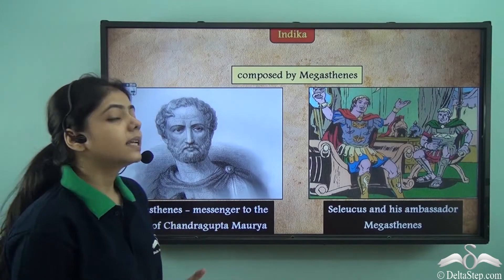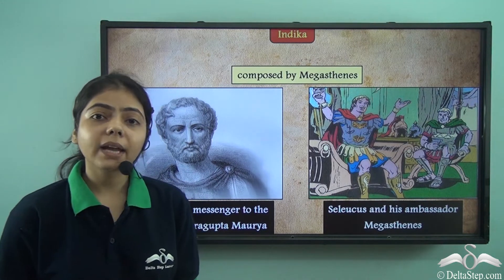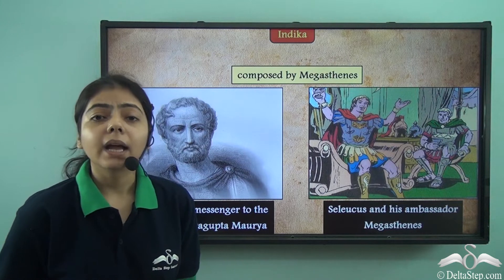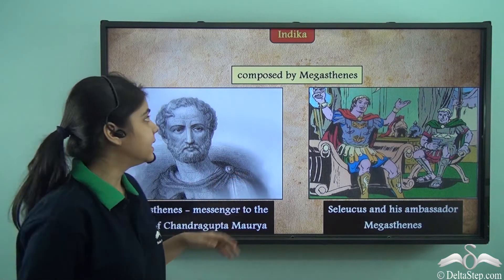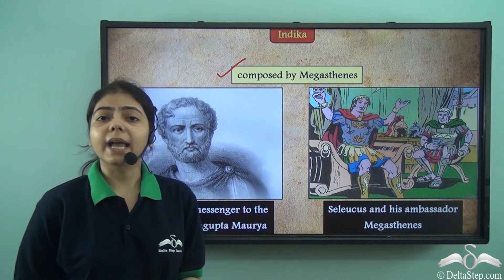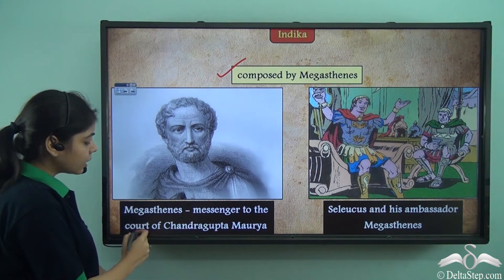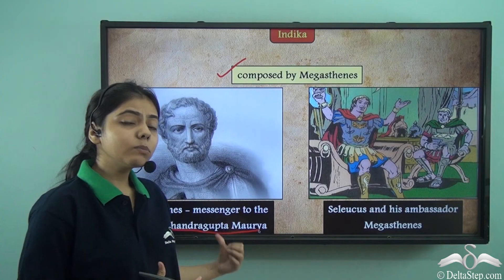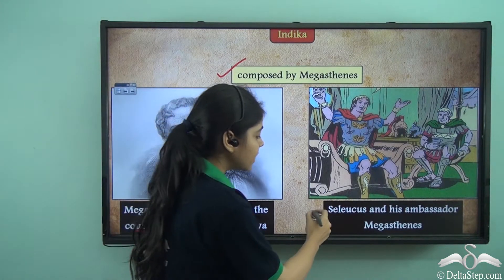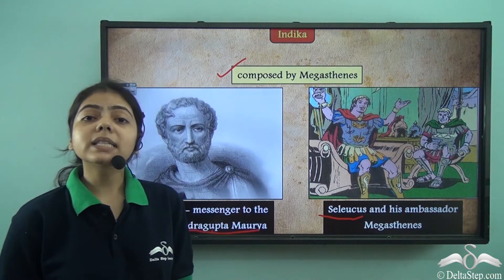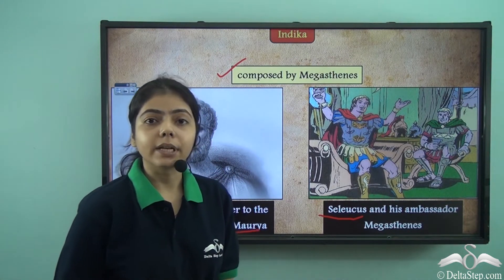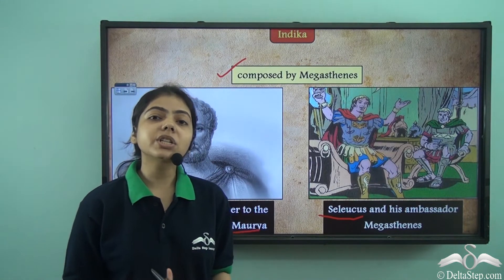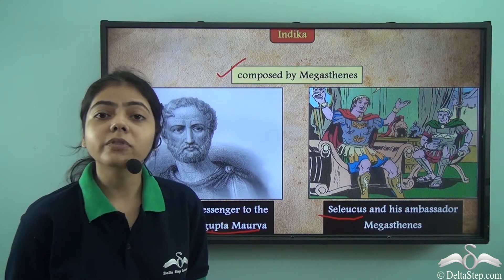The first literary source from which we get to know about the Mauryan Empire is the Indica. Indica is a book written by Megasthenes, who was the messenger in the court of Chandragupta Maurya. Megasthenes came to the court as he was sent by Seleucus Nicator, the general of Alexander the Great. In his book Indica, Megasthenes talked about the political situation and developments during the time of Chandragupta Maurya.